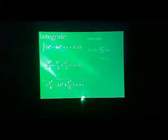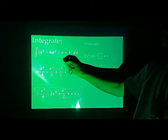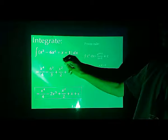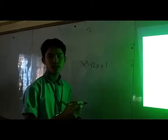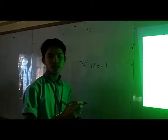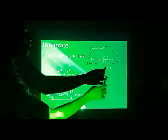The given here is x cubed minus 6x squared plus x plus 1. If we find the derivative, it becomes 3x squared minus 12x plus 1. But if we find the integration, this will be our formula: x raised to n times dx equals x raised to n plus 1 over n plus 1 plus c, which is the constant.